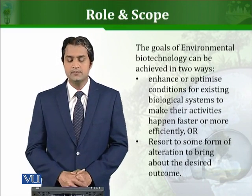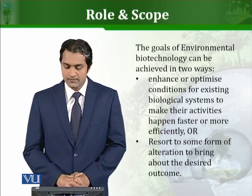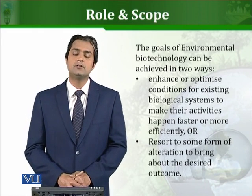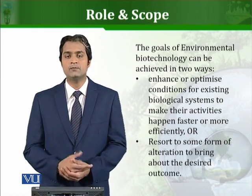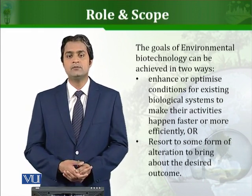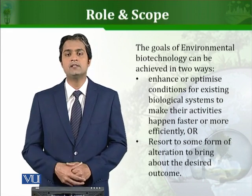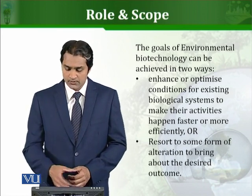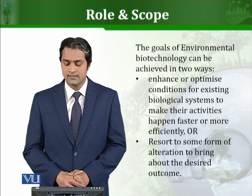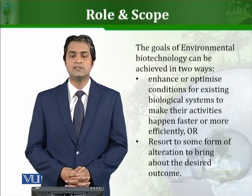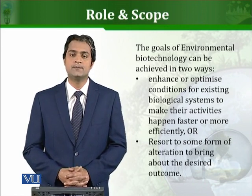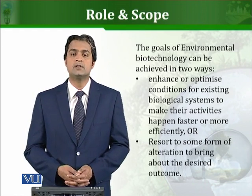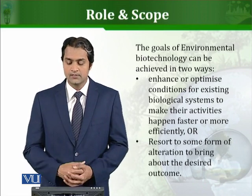The goals of this field can be achieved in two ways. First, we can enhance and optimize conditions for existing biological systems to make activities happen faster or more efficiently. Or, second, we can resort to some form of alteration to bring about the desired outcome. For example, you may have heard of GMOs — genetically modified organisms. We can produce such enhanced living organisms that can work more efficiently to solve these problems. So in these two ways, the goals are achieved.